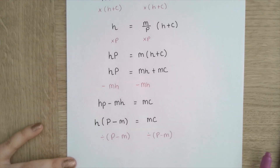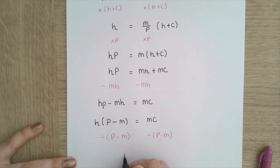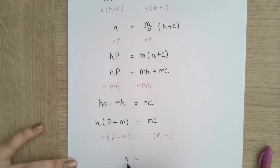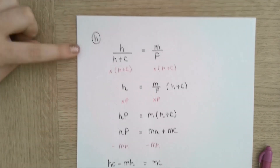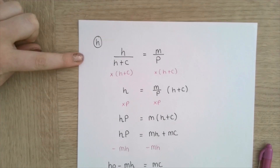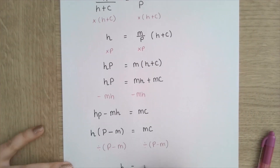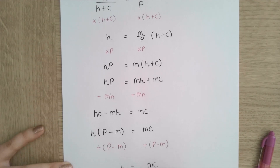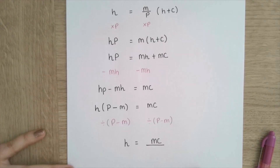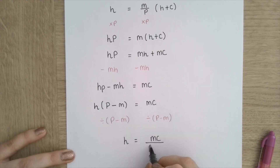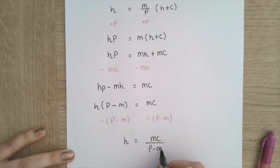And now I just divide by that bracket. Once I've factorized, all I need to do is divide it. The letter I factorized out — which should be the letter that you want to make the subject — is then equal to whatever you had on the other side over your bracket, p minus m. So h equals mc all over p minus m.